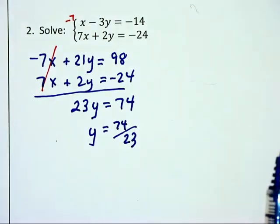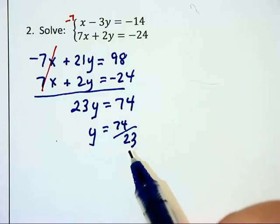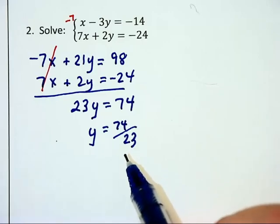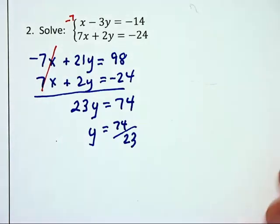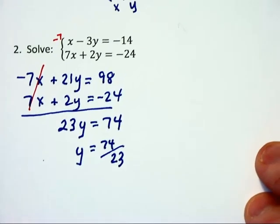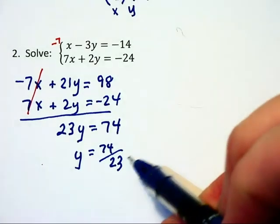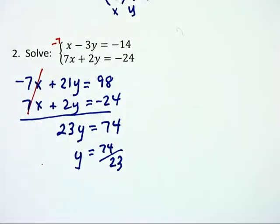Now when you get an ugly answer like this, the first thing you want to do is just throw your hands up. And then you want to go back and double check your work and you'll find that there is no error here. You have done this correctly. So let me show you what you can do rather than take this 74 over 23 and substitute it back in.